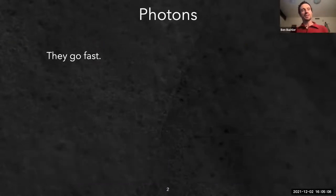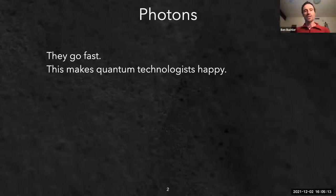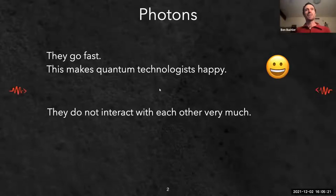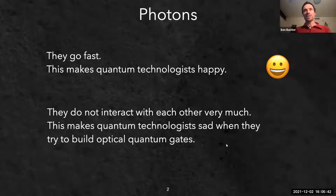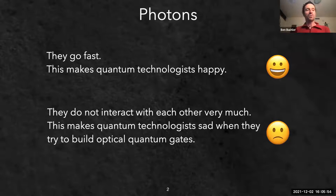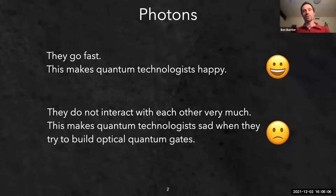Photons go very fast, which is great for sending information long distances - useful for quantum technologies. On the other hand, some people wish to do photonic quantum computation or manipulate photonic quantum states with the goal of building optical quantum computers. The difficulty is that photons do not interact with each other very much, at least in free space, making it extremely difficult to build an optical quantum gate.